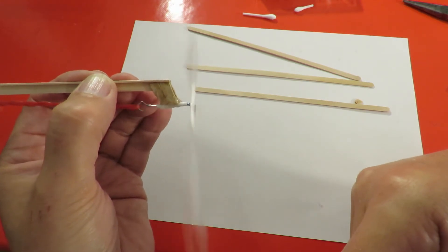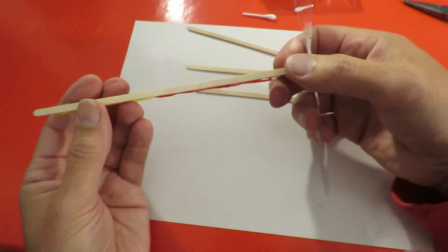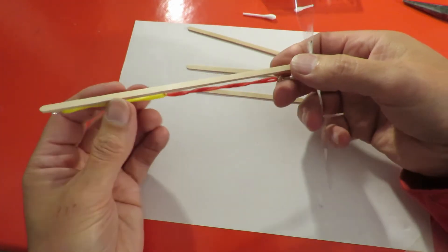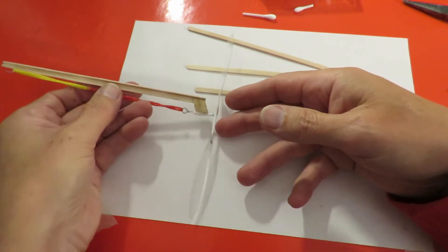But that seems to be working so we need to cut out some wings, glue them on top, cut out the tail, and then try and sort out some sort of centre of gravity.